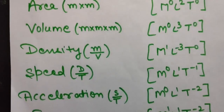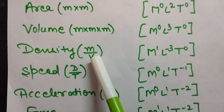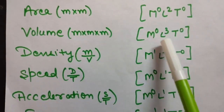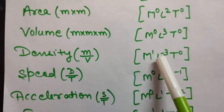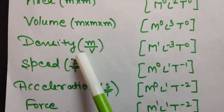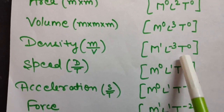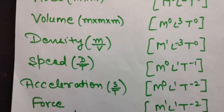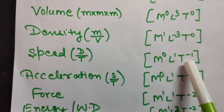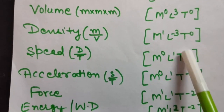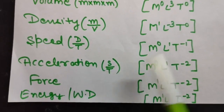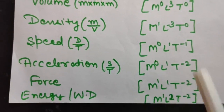For density, defined as mass per unit volume — mass gives M¹, and volume is L³, but since we are dividing it becomes L to the power minus 3. So the dimensional formula of density is M¹ L⁻³ T⁰. For speed, which is distance upon time — L¹ upon T gives M⁰ L¹ T⁻¹. For acceleration, which is speed upon time — it becomes M⁰ L¹ T⁻².